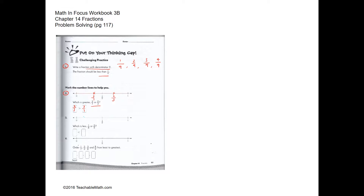Similarly, one eighth is less than one half and sits around here on the number line. Two fifths is more than one half and falls around here. So one eighth is less than two fifths.